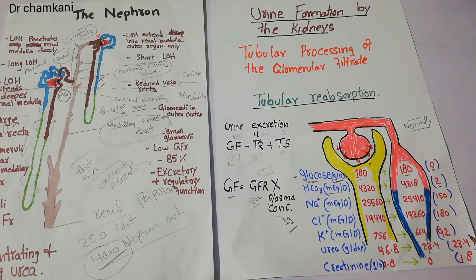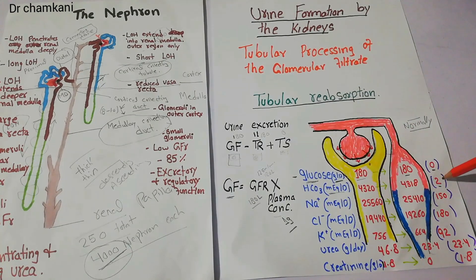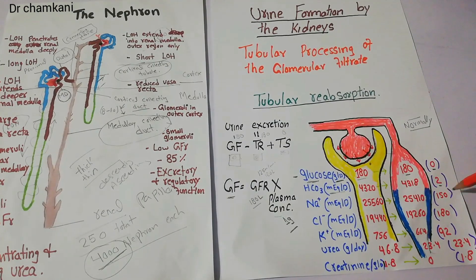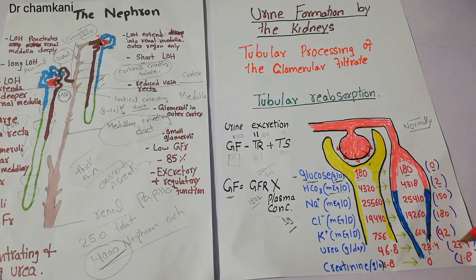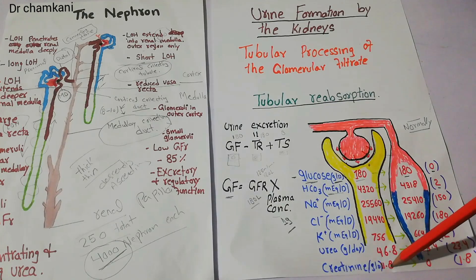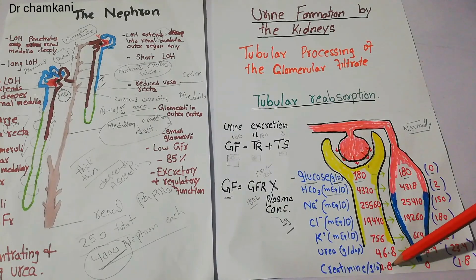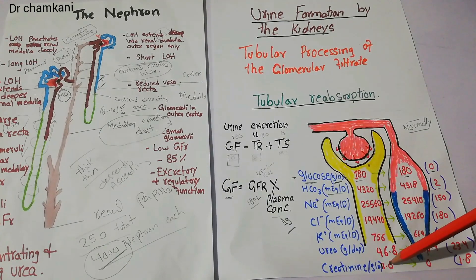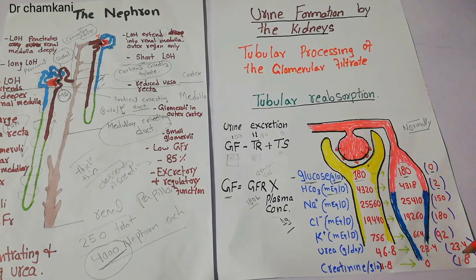So around 50% of urea is excreted in the urine. Compare this to glucose: 0% was allowed into the urine. Only a very small amount of bicarbonate and sodium were allowed into the urine. But around 50% of urea is excreted. For creatinine: 1.8 grams per day is filtered, 0 is reabsorbed, and almost all filtered creatinine goes into the urine — it is fully excreted.